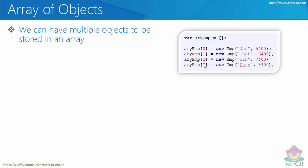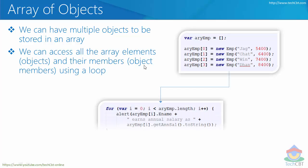The first array element at location zero inside arrayEmp is going to be a new object created from a constructor function called emp, which accepts two parameters. We are essentially creating an instance of that constructor function, and the resulting object will have two members with values assigned to them. The entire object is stored at the 0th location of the array. Similarly, more objects can be instantiated and assigned to locations 1, 2, 3, and so on.